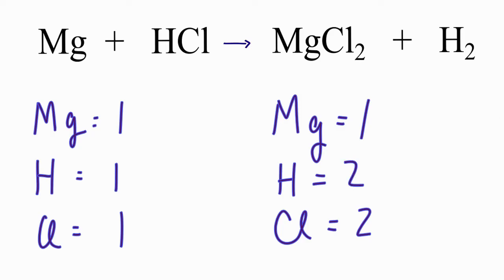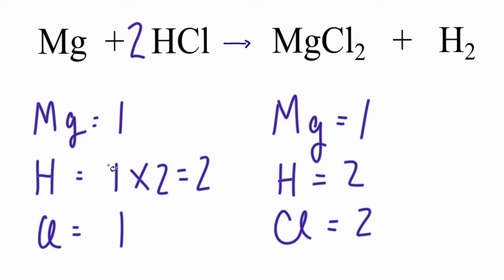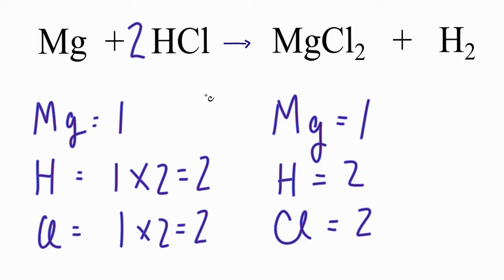We can only change the numbers in front of these compounds and elements — those are called the coefficients. If I put a two in front of the HCl, I would have two times the one, giving me two hydrogens on the reactants, and I have two hydrogens on the products — those would be balanced. This two also carries over to the chlorine, so two times the one gives me two chlorines. Now I have two chlorines on the reactants, two on the products, two hydrogens, two here, one magnesium, one magnesium — and this equation is balanced.